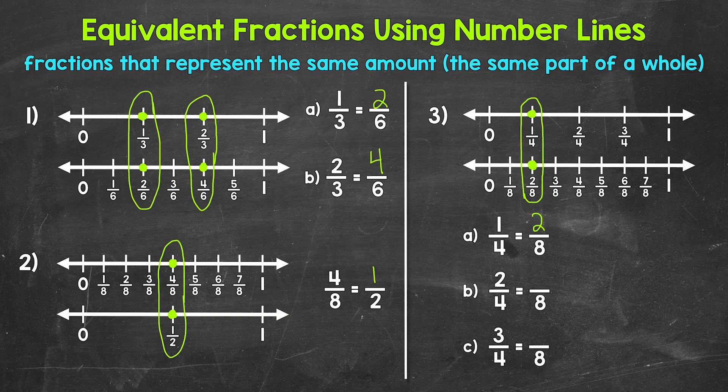Now let's move on to B, where we have two fourths is equivalent to how many eighths? Two fourths is right here on the number line, and if we look right below, we can see that four eighths is at the same place. Two fourths and four eighths are equivalent fractions.